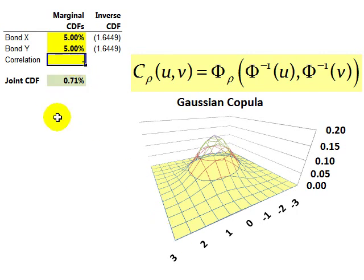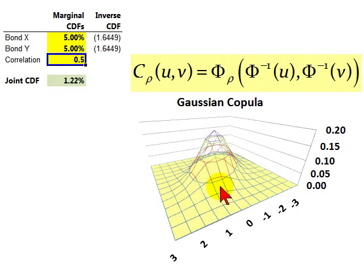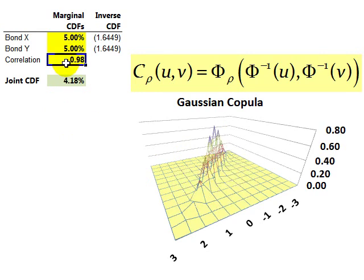And now I can increase the correlation, let's say 0.5, and the mountain peak is going to change shape a little bit. And let me get very extreme here with a 0.9 or so. And you can see we end up with a very sharp kind of mountain. And now with a high default correlation, the bivariate distribution is 4.18%.